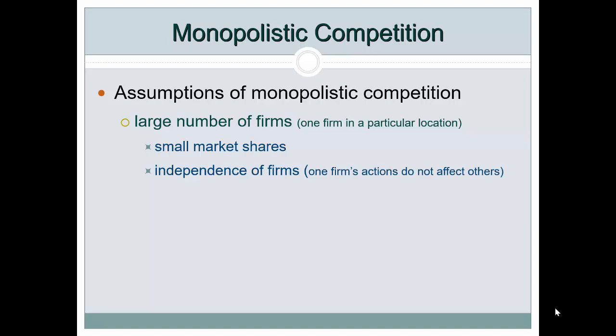Hairdressers and barbers also have tiny market shares because there are so many of them, although we might travel to other towns because we like their services. That's an interesting characteristic of monopolistic competition. Firms are independent of each other — the decision of one firm doesn't affect others — and interdependence is something specific to oligopoly. Entry is free, implying no significant cost, though in practice there may be small setup costs.